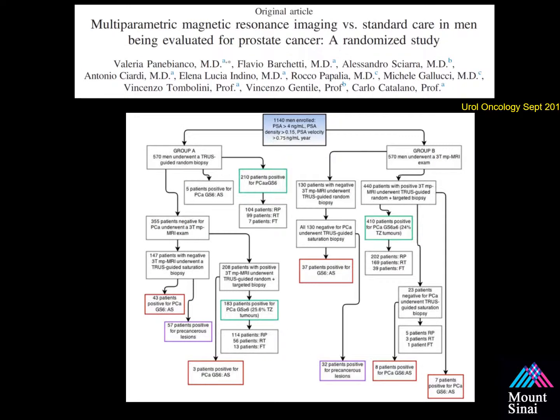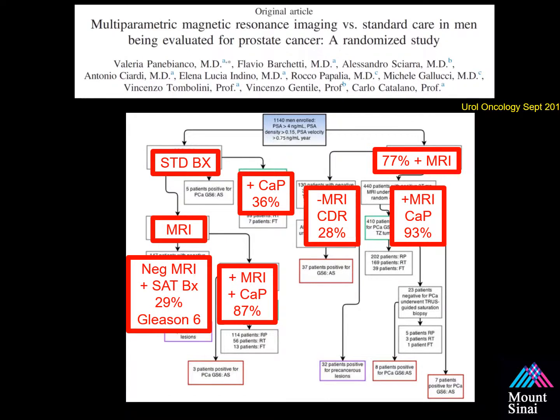Dr. Panabianco's group from Italy reported on a randomized controlled trial in a group of over 1,000 men. These men had elevated PSAs higher than 4, abnormal PSA densities, and abnormal PSA velocity. They were randomized into standard biopsy or multiparametric MRI before biopsy. In their cohort, 77% of men had a positive MRI. If they had a positive MRI, 93% were found to have prostate cancer. If the MRI was negative, the cancer detection rate was only 28%, and a majority of those were low-grade disease.